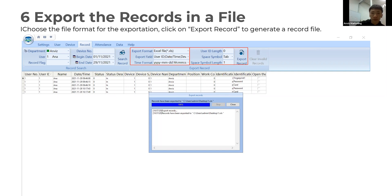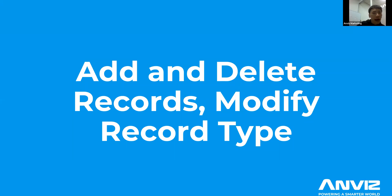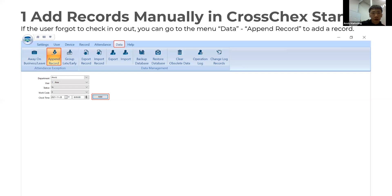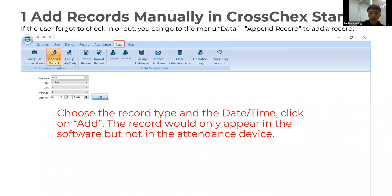The next part is about adding, deleting, or modifying records. It is very common for a user to forget to check in or check out, so they may ask an admin to manually add a record. In this case, the admin can go to the Data menu and select Pen Record. You can add a record for the user by selecting the status, the user, the department, and the clock time.